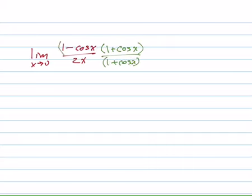This is called the conjugate of this top thing. And when you do that, you're going to get that trig identity, which is 1 minus cosine squared x all over 2x times 1 plus cosine x.